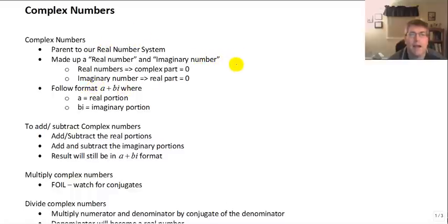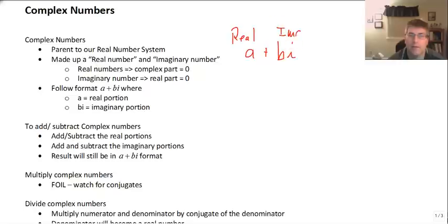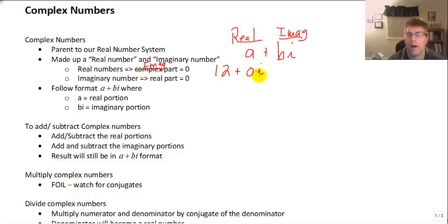A complex number follows the format of a plus bi, where a is the real portion and bi is the imaginary portion. Our real numbers have an imaginary part equal to 0. So if we had the real number 12, as a complex number it's really 12 plus 0 times i. Well, 0i is just 0, so it's 12 plus 0. We don't show the imaginary portion when we deal in real numbers.